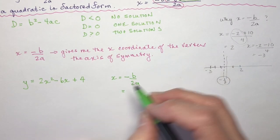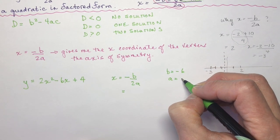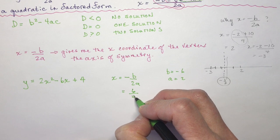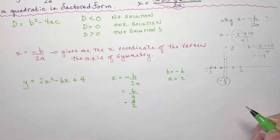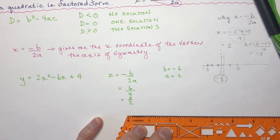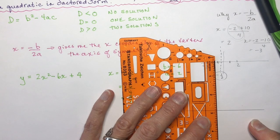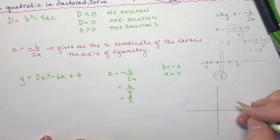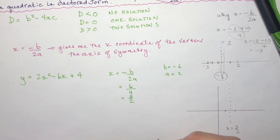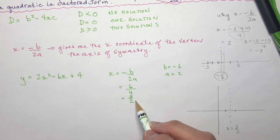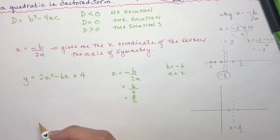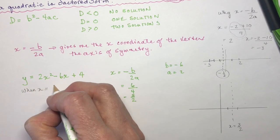Plugging in: b is minus 6 and a is 2. So minus minus 6 is 6, over 2 times 2, which is 6 over 4, which is 3 halves. That means my axis of symmetry is going to be at x equals 3 halves — that's 1 and a half. There's my axis of symmetry. Now if I want to know the vertex, I'm going to plug 3 halves into the equation to find the y-coordinate when x is 3 halves.